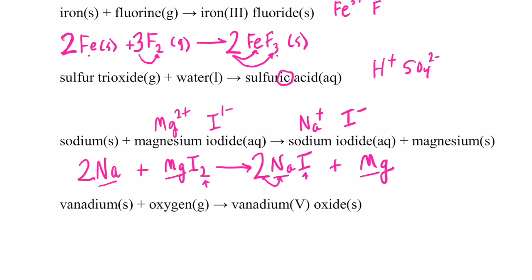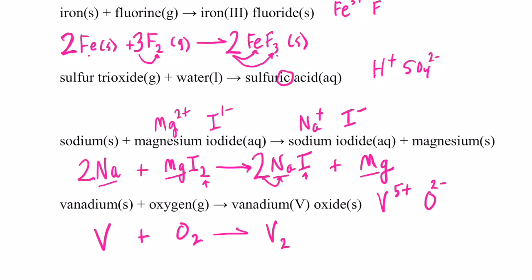One more for today's video — try it on your own then come back. Vanadium elemental is just V, and oxygen is O₂ — it's a diatomic element. We're making vanadium(V) oxide: vanadium is 5+, oxide is in group 16 so it's 2−. That gives V₂O₅, since two vanadiums give 10+ and five oxygens give 10−.